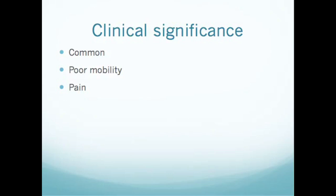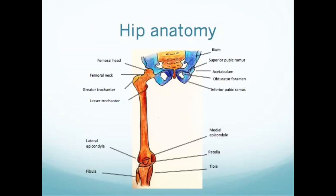The neck of the femur is predisposed to fracture, which is why we see it so commonly. As we get older and bone density changes, demineralisation of bone combined with reduced mobility and biomechanical factors makes fracture more common when elderly people fall.